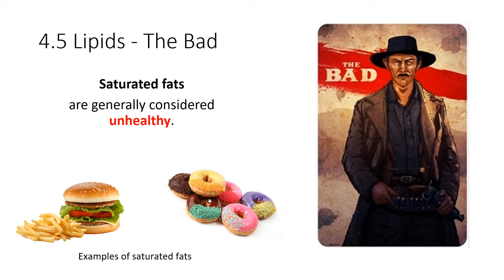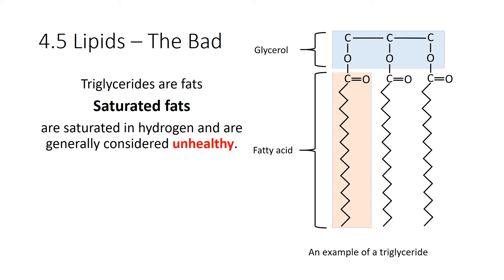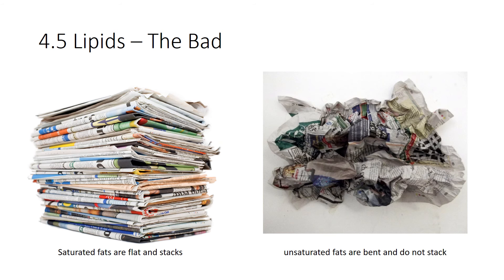Saturated fats are generally considered to be unhealthy. When you eat burgers, pizza, french fries, and donuts, you get lots of saturated fats. Saturated fats are saturated in hydrogen — they have the most amount of hydrogen available, which means they're saturated in energy as well. Those long chains are straight, unlike unsaturated fats where they were bent. Saturated fats are flat, meaning they can stack on top of each other, and it also makes them solid at room temperature.